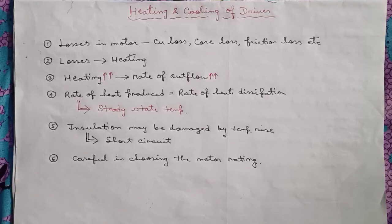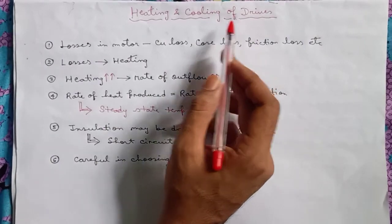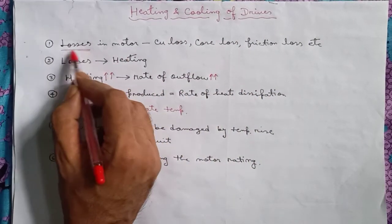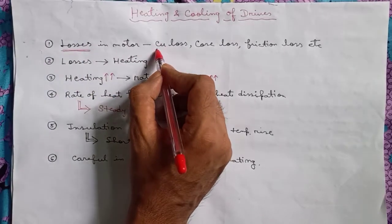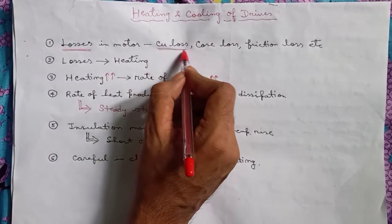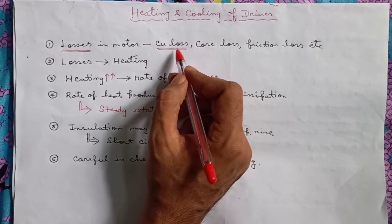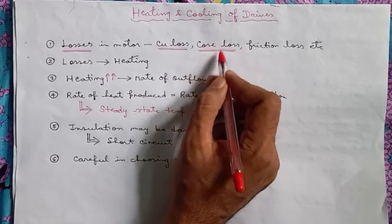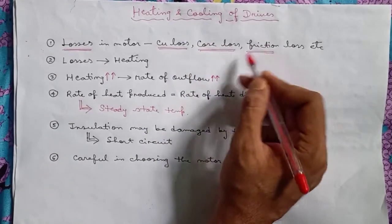Welcome back to my channel. In this video I am going to discuss the heating and cooling of electric drives. We all know that when a motor runs, various losses occur inside the machine such as copper loss in the windings such as armature or field winding, core losses in the magnetic materials, and friction losses in the moving parts of the machine.